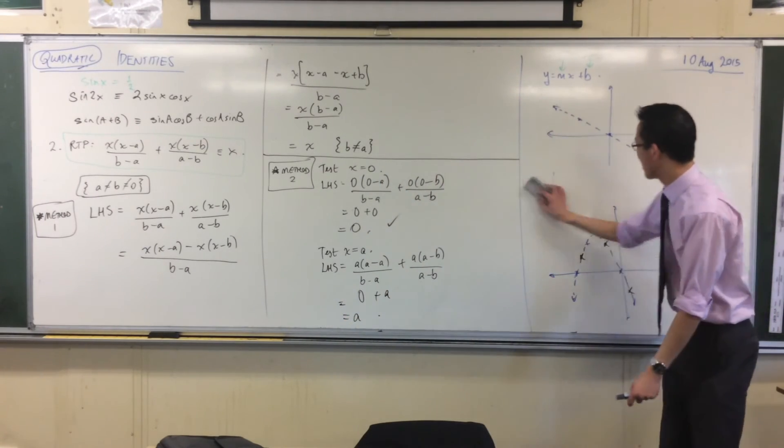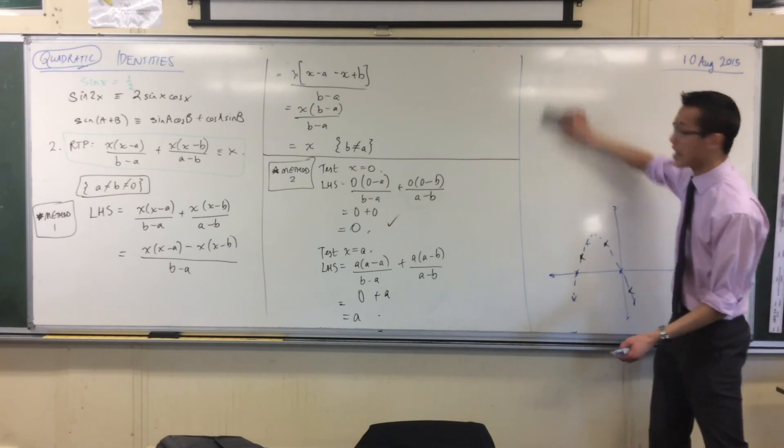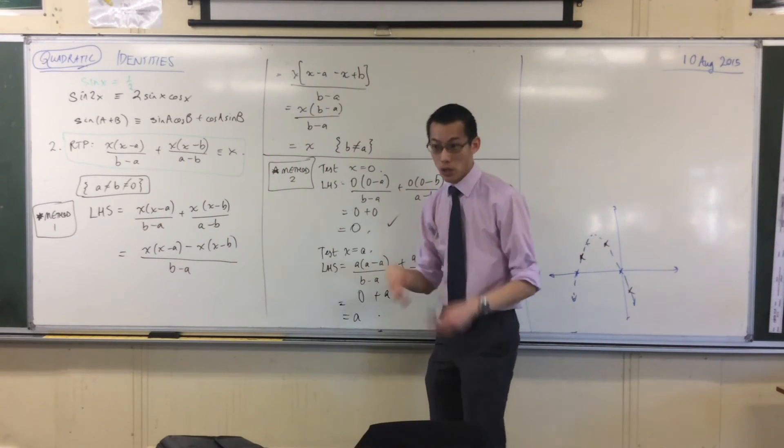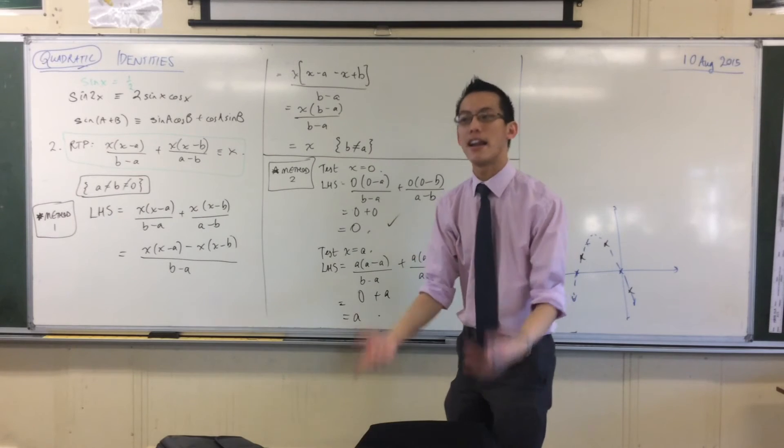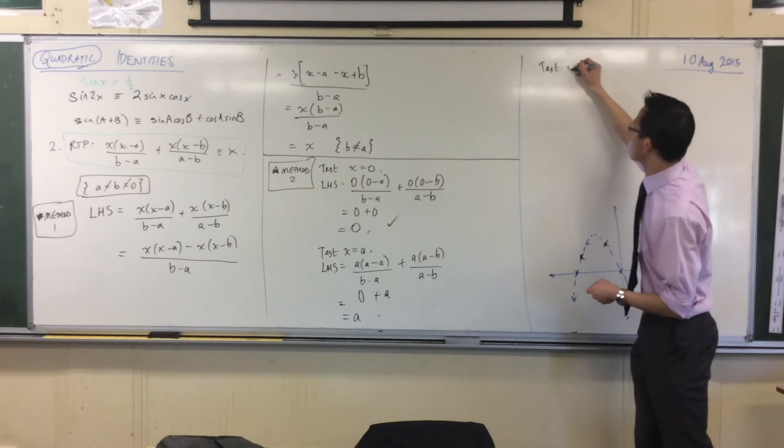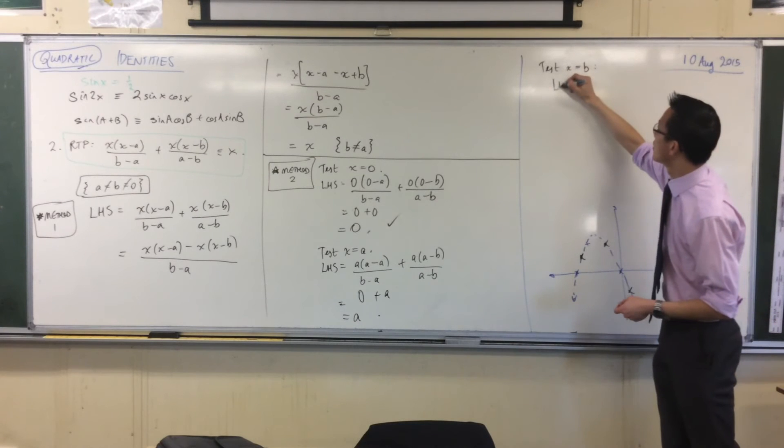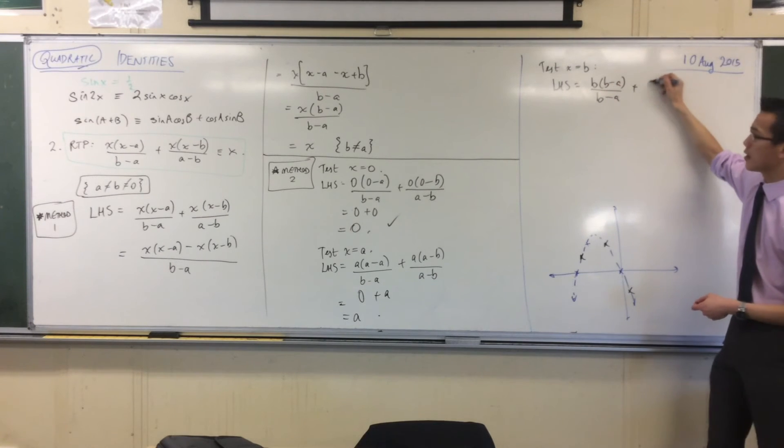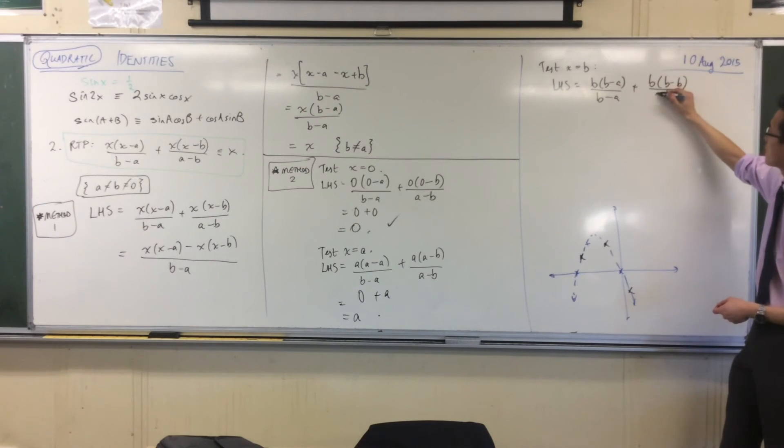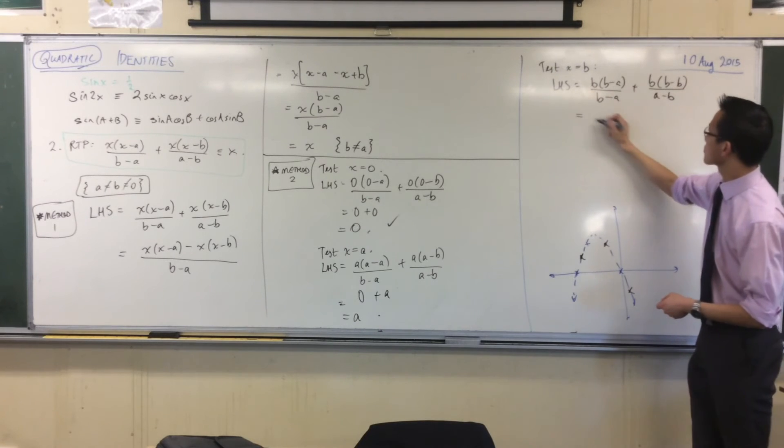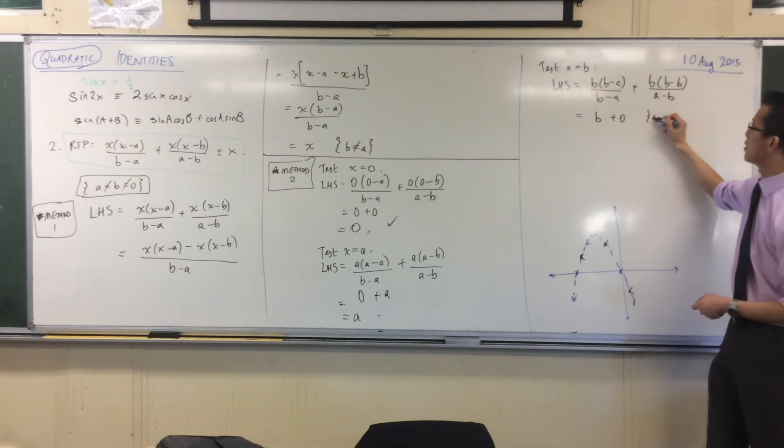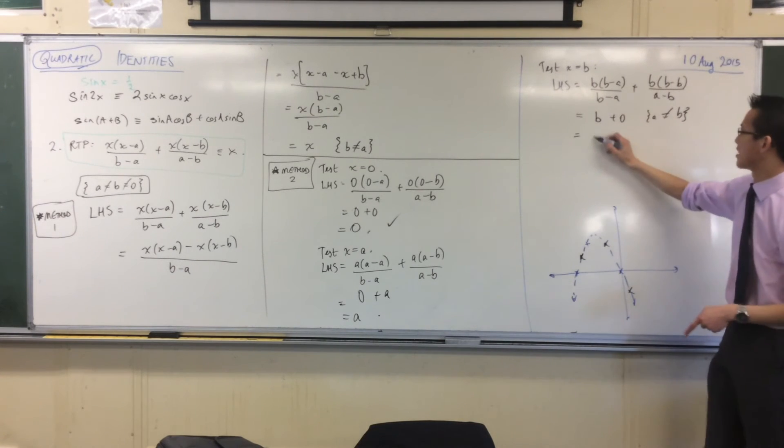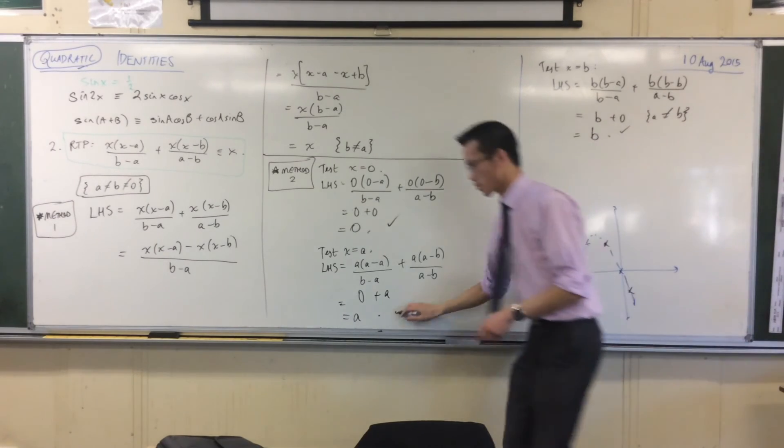Okay. Now you can kind of see where I'm going. I'm going to test x equals b. Now, I didn't have to test x equals b. I could test—I mean, there's no reason why, based on method one, we should be able to test any value we like. But we might as well test easily. So let's go ahead and test our last value here. What are we going to get? B, B minus A, B minus A, B, B minus B. We're all true.